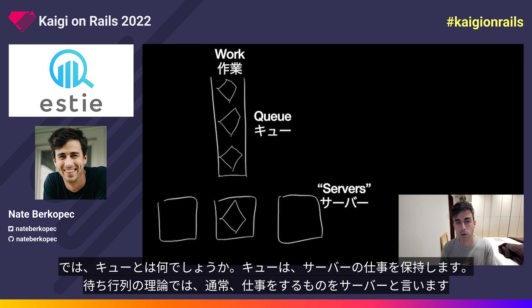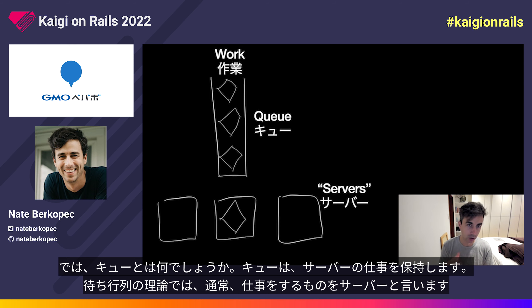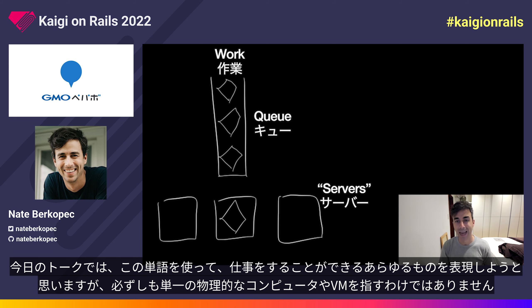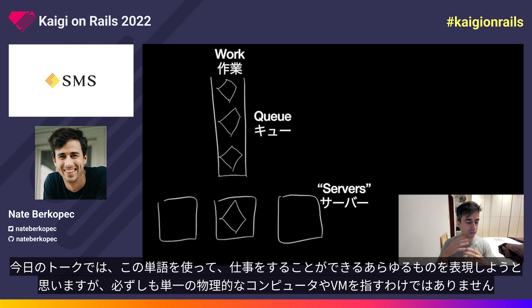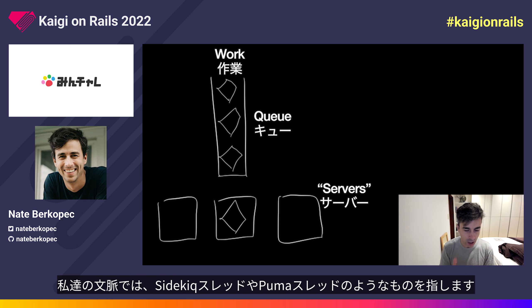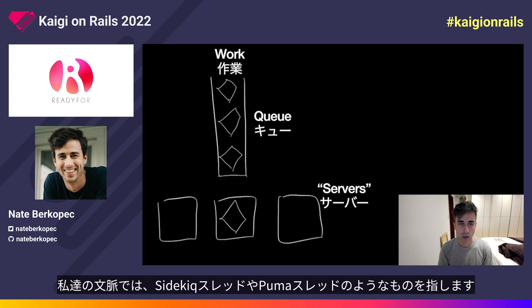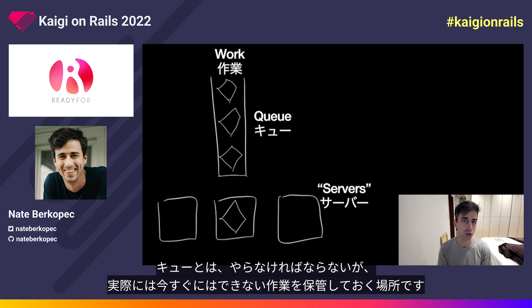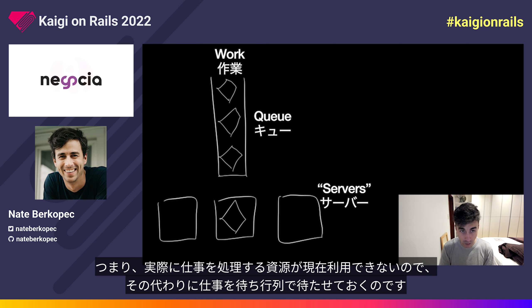So what's a queue? Queues hold work for servers. In queuing theory, we usually say that the thing doing the work is a server — anything that can do work, not necessarily a physical server or virtual machine. In queuing theory, a server is just anything that does work on the queue. In our context, it could mean a Sidekiq thread, a Puma thread. A queue is a place where we keep work that needs to be done but we can't actually do it right now — the resource which actually processes work is not currently available, so instead we make it wait in the queue.